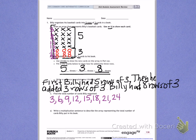Part D. Write a multiplication sentence to describe the array representing the total number of cards Billy put in his book. Look back at your array and write a multiplication sentence that shows row times size equals the total.